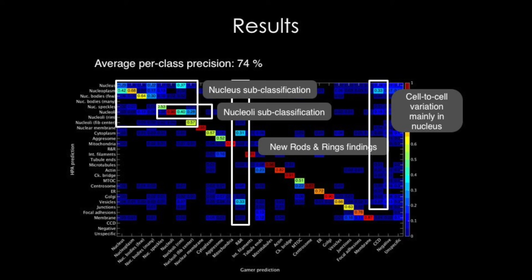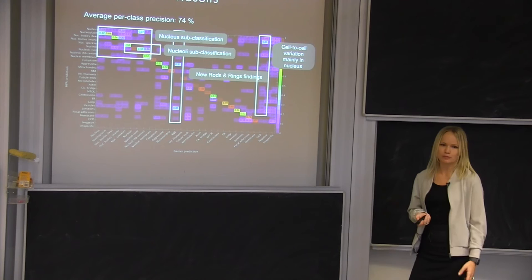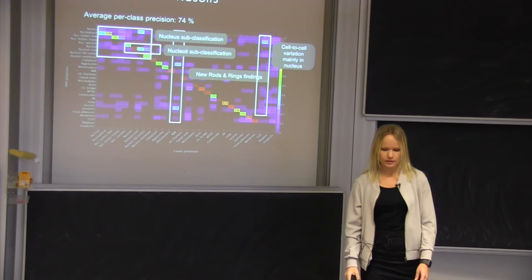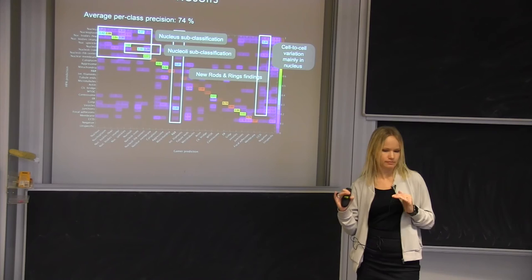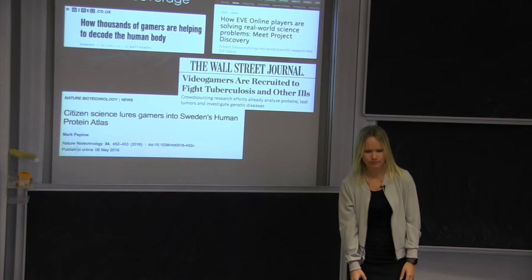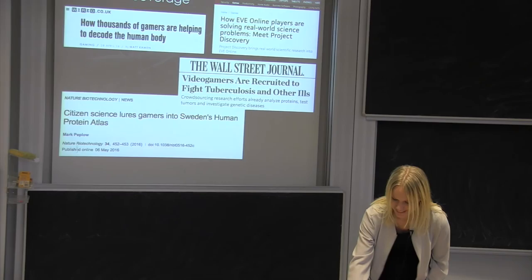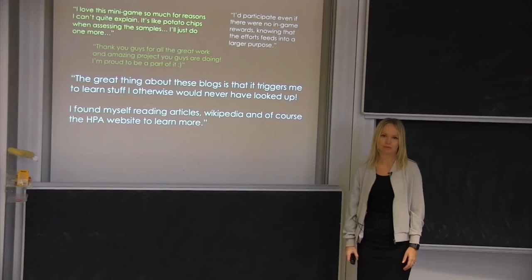We're not quite ready to present the results yet since the game is still going on, but we can see this is an analysis of the first round of the data set. They are doing quite well, average per class precision of 74%, that's kind of good. They are subclassifying the patterns we want them to subclassify, most importantly the nucleus, the nucleoli. They're finding new rods and rings. They identify a lot of cell-to-cell variation. So they are providing good data, and it's kind of at the level of what computational image analysis have done so far. Besides this, it's been a very fun experience and we got a lot of media attention in journals we normally don't publish in, like PC World and other things like that.